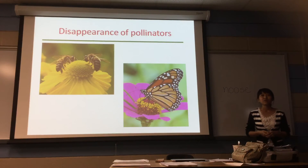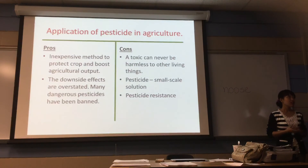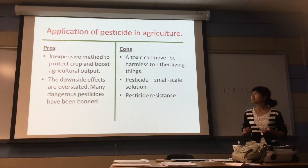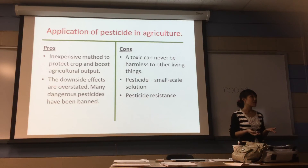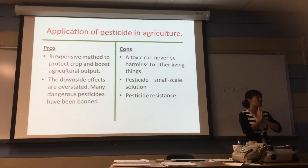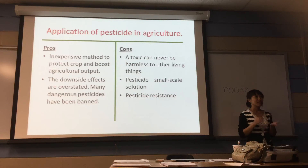And pesticides are also a cause for the disappearance of some pollinators like bees and butterflies. So the third part — I want to look at some controversial issues about the application of pesticides in agriculture. Other people who are in favor of using pesticides say that pesticides are a cost-effective and inexpensive method to protect the crop against harmful insects and to boost the agricultural output.